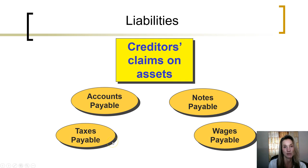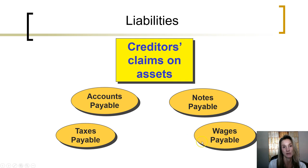Taxes payable represent unpaid taxes, whether state, federal, or other types. Wages payable occur when employees have earned wages for which they have not yet been paid. These are some basic types of liabilities that reflect creditors' claims on assets.